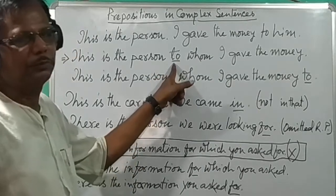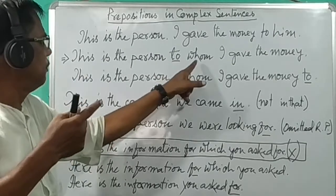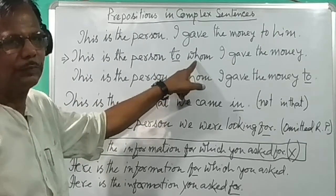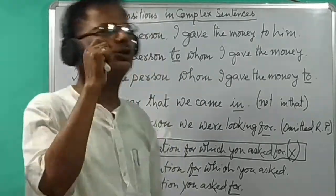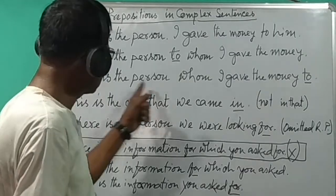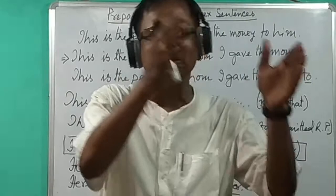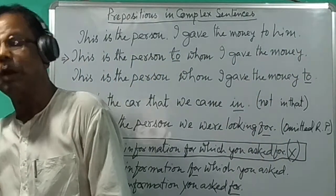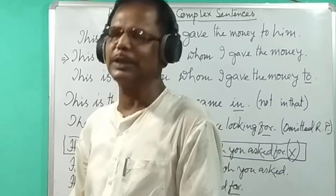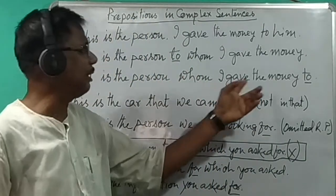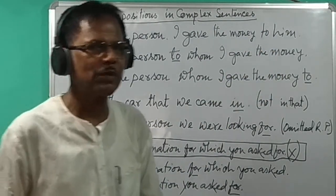The preposition 'to' should be placed before the relative pronoun — 'to whom I gave the money.' We can also say: 'This is the person whom I gave the money to.' We can also place the preposition at the end of the sentence.